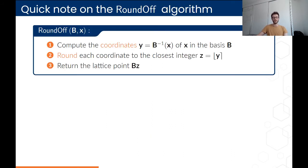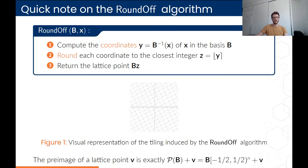A quick note on the round-off algorithm since it plays an important role. The algorithm takes as input a basis B and a vector x, and computes a lattice point close to x. First you compute y, the coordinates of x in the basis B, then you round them, and return the lattice point corresponding to these rounded coordinates. Geometrically, this algorithm splits space R^n into a tessellation of parallel pipettes spanned by B. The preimage of any lattice point is the parallel pipette surrounding it.